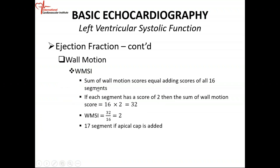You're going to sum the wall motion scores across 16 segments. For example, if you're looking at 16 segments and all the segments score 2 — they're hypokinetic — then it will be 16 times 2, which is 32, divided by the number of segments, which is 16. So the wall motion score index is 2.